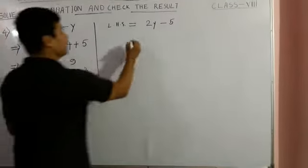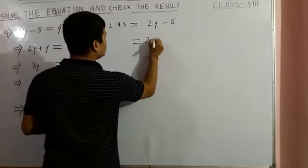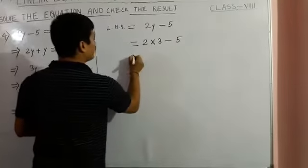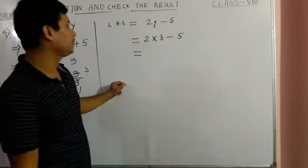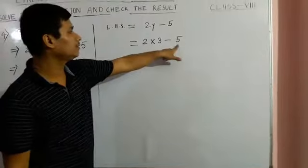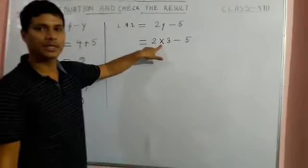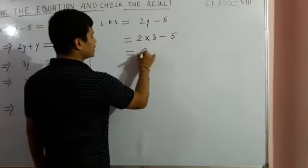We can place it here: 2 into 3 minus 5. According to the math property, here first we have to do the multiplication part. 2 times 3 is 6.